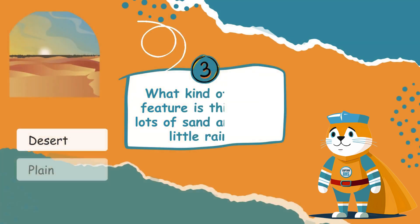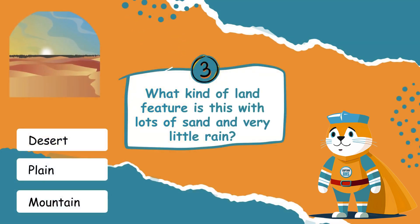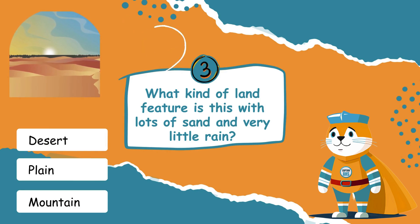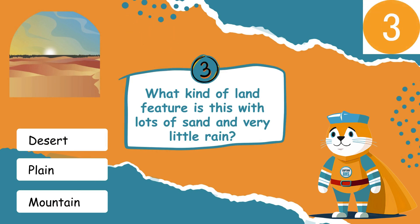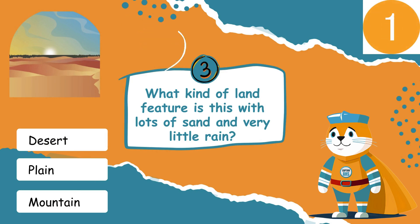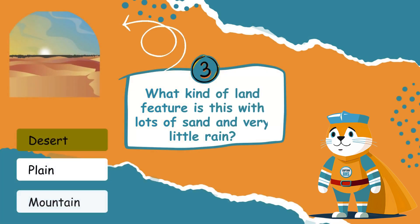Look at the picture. What kind of land feature is this with lots of sand and very little rain? Yes, the answer is desert! Deserts are dry, sandy areas that get very little rain.